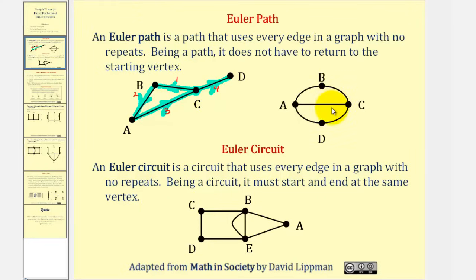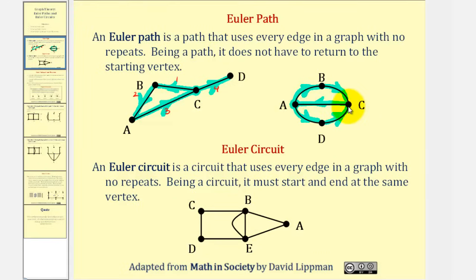Looking at our second example, if we start at vertex A, we could go from A to B, B to C, C to A, A to D, and D to C. So again, we started at A and ended at C, using all the edges exactly once. If we number these, we'd have one, two, three, four, and five.